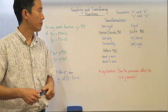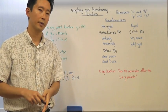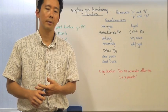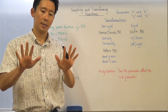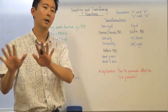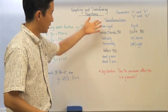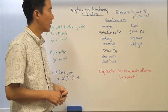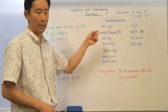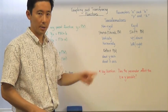We have non-rigid transformations, which actually change the shape of the function. And we have rigid transformations, which basically just keep the function the way that it is and shift it left, right, upward, or down. When we're talking about non-rigid transformations, we can either stretch or shrink the parent function vertically or horizontally.